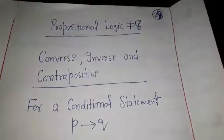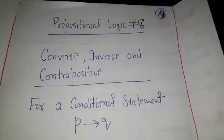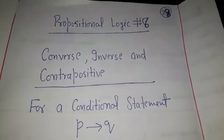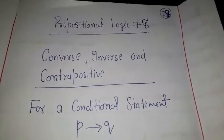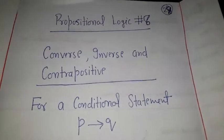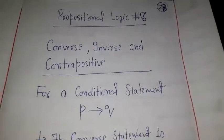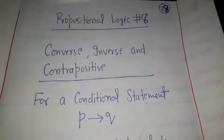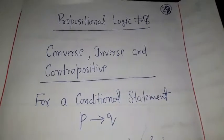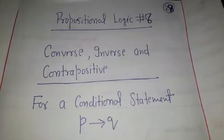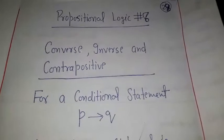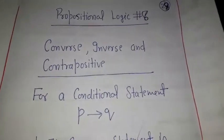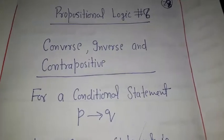Hello students. In the last lecture we discussed how to translate natural language statements into symbolic form in propositional logic with the help of connectives. Now the next topic is about some important properties of the implication operation — that is, the if-then operation. These properties are called the converse, inverse, and contrapositive, and they are always defined for the implication or conditional statement.